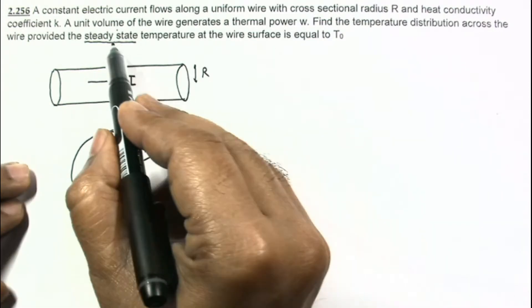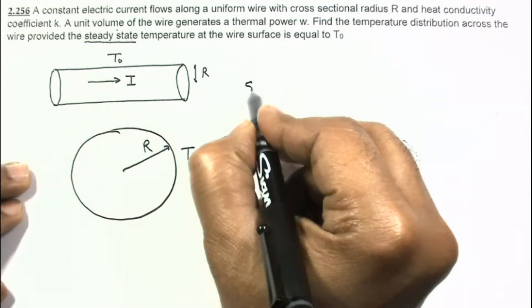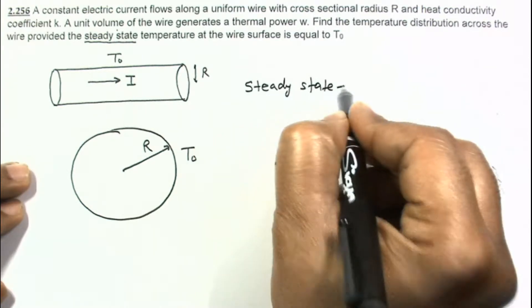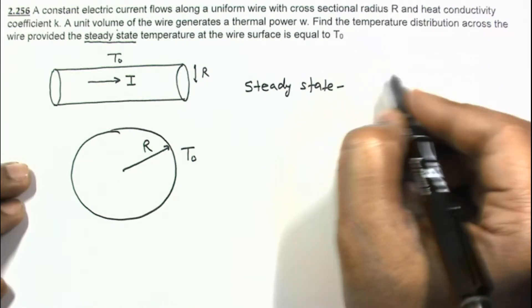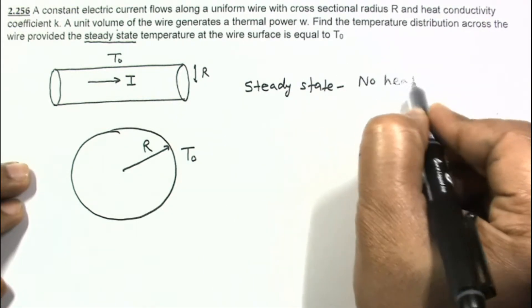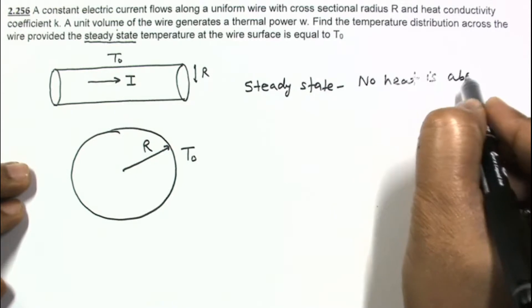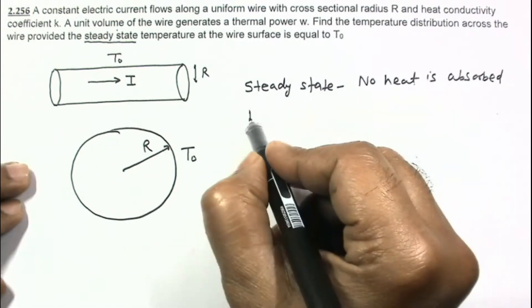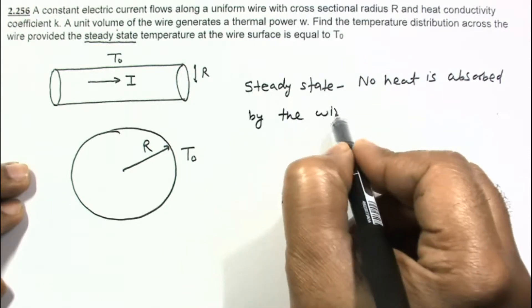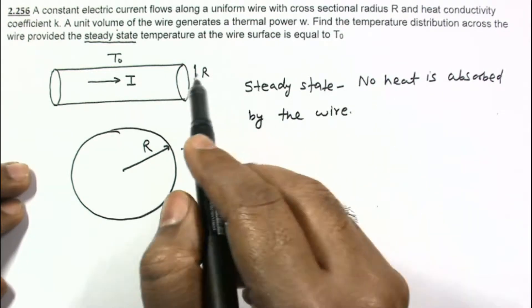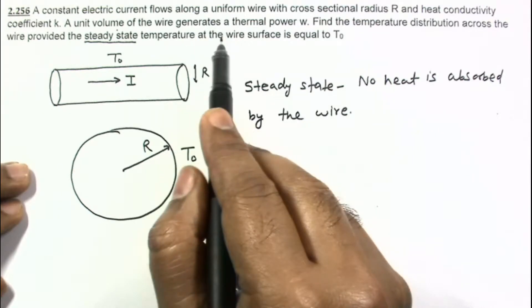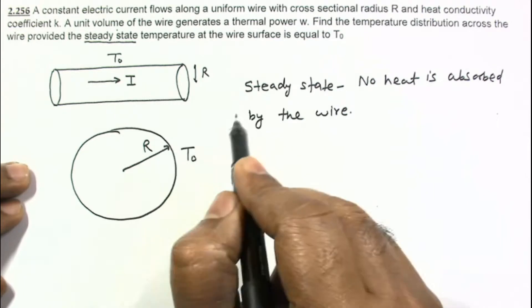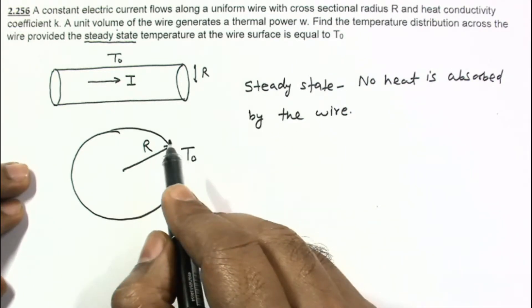We are given that wire is in steady state. Steady state means no heat is absorbed by the wire. The heat which is being generated as thermal power is directly conducted by this material, by conduction.